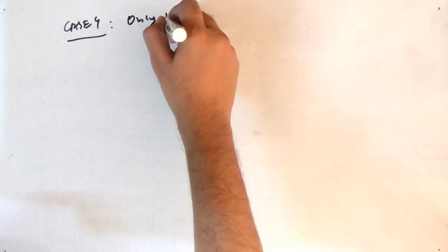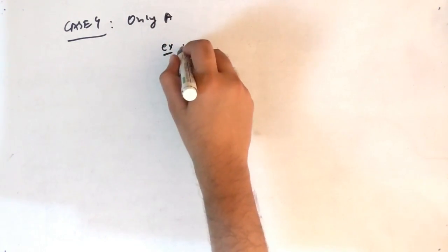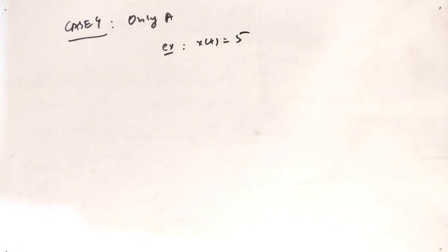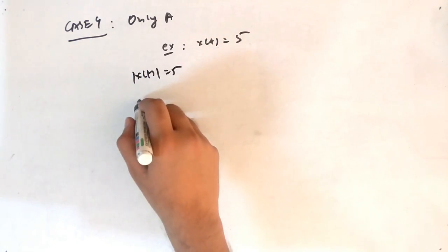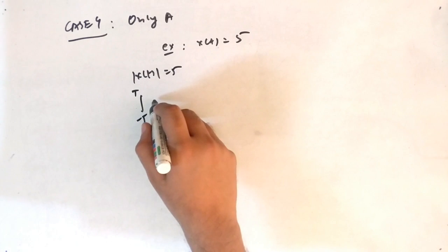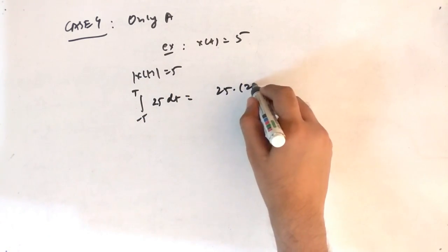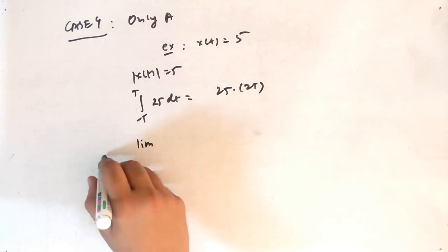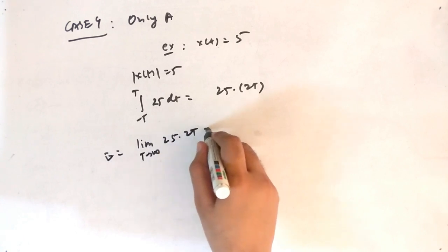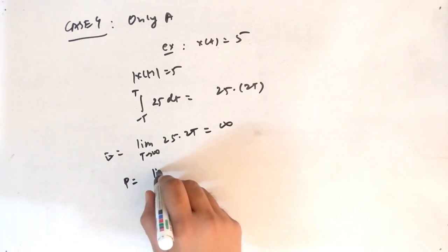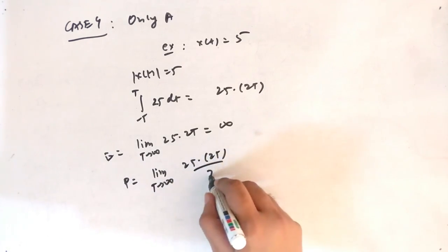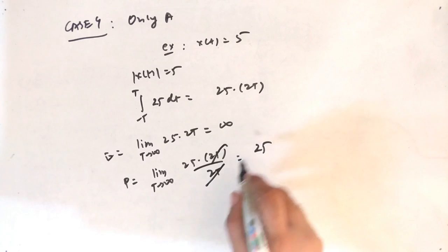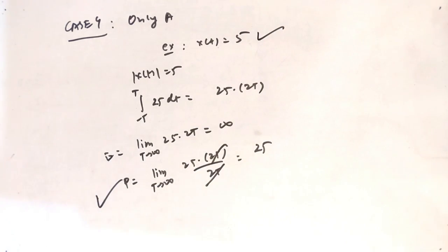Special case 4: only amplitude, x(t) = 5. Take mod = 5. Integral from −T to T of 25 dt = 25·2T. Energy = limit T→∞ of 50T = infinity. Power = limit T→∞ of 50T / (2T) = 25 watts. This is periodic (constant signal), so it is a power signal with power = 25 W and energy = infinity.